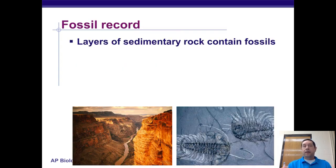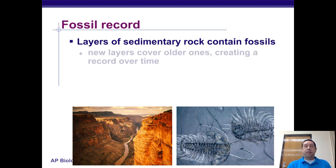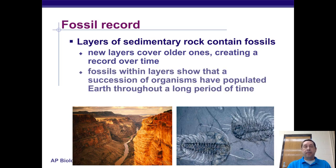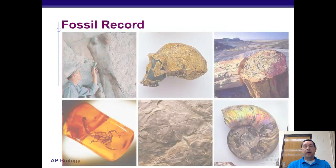The fossil record is a record formed in a particular type of rock, typically called sedimentary rock, though it can form in other places as well. It contains the remains or evidence of the remains of once-living species. Because of the way sedimentary rock forms, new layers cover old ones and create a record over time. Fossils within layers show that a succession of organisms have populated the earth throughout a long period of time.